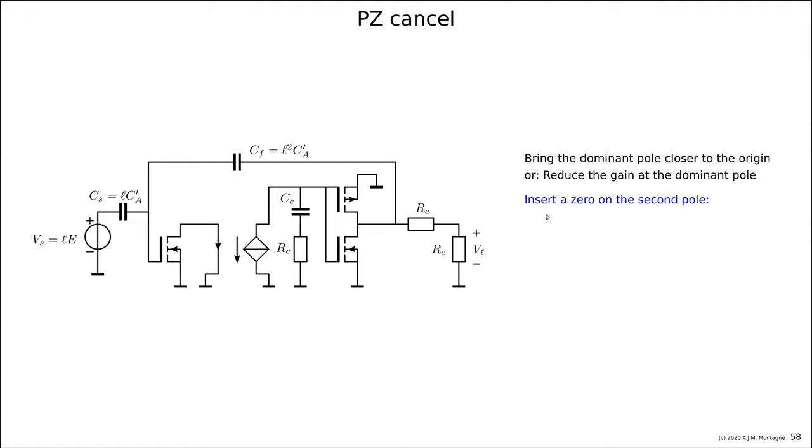We insert a zero on the second pole, the non-dominant. Well, it still belongs to the dominant group, but in terms of which is more dominant than the other, I call it the second pole. And so we have the frequency of the zero. We know where it should be, and we can calculate the values that are needed for compensation. So here we have the design equation for CC.